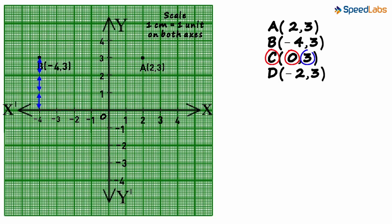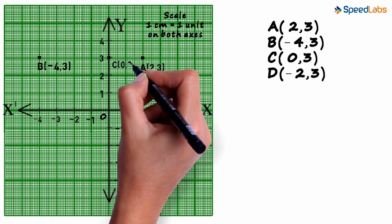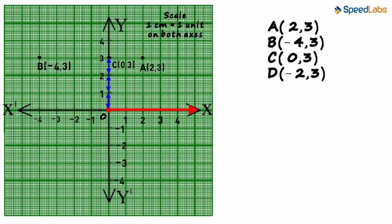We mark the point 3 units above the origin on the y axis. Point C is 0, 3. It will be marked here. 0 on the x axis and 3 on the y axis.